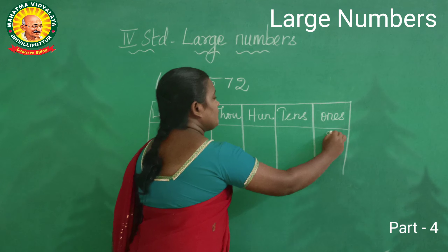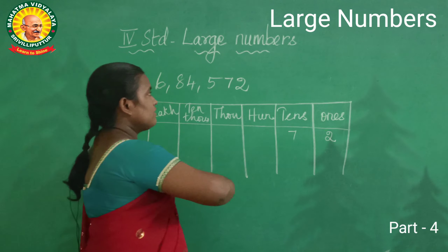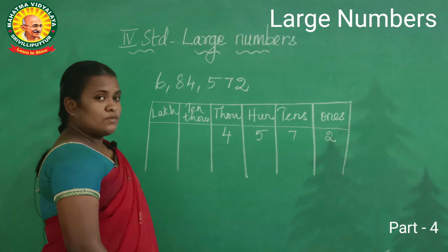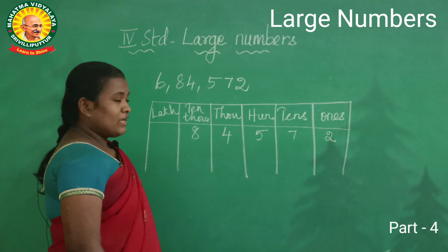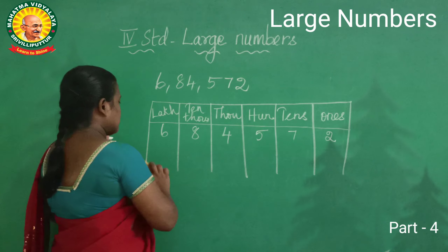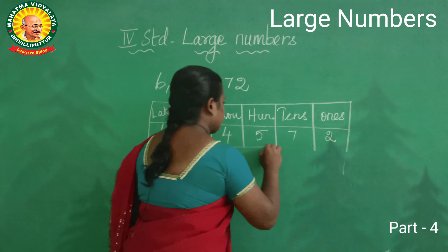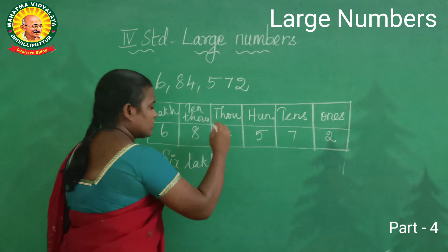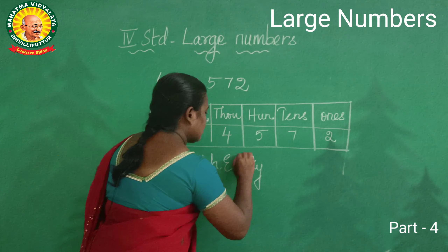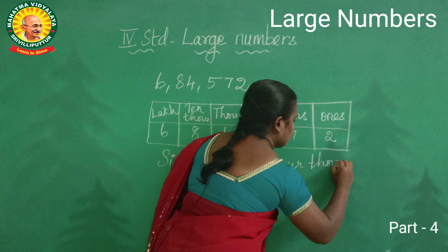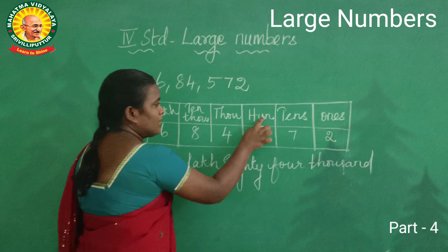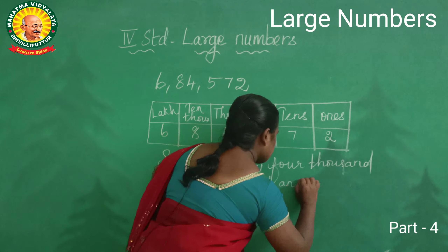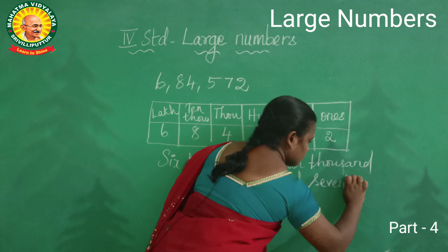Now say the numbers. In ones place: two. Tens place: seven. Hundreds place: five. Thousands place: four. Tens thousands place: eight. And lakh place: six — very good. Now the number name: six lakh, eighty-four thousand, five hundred and seventy-two.